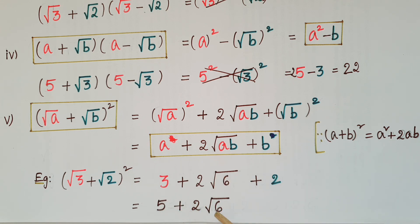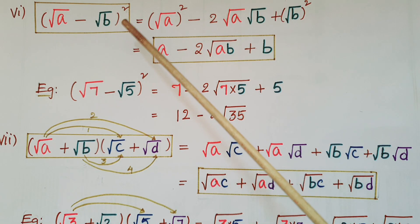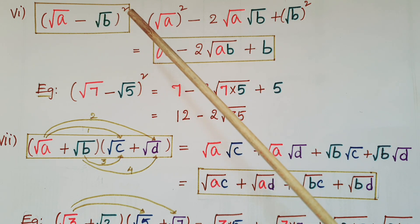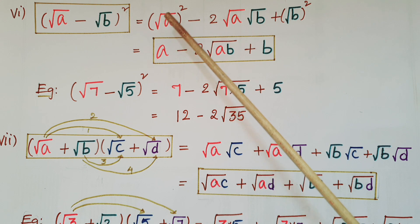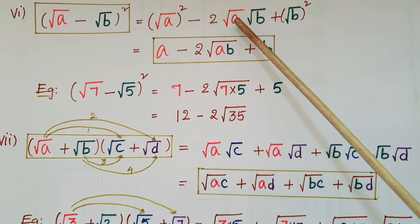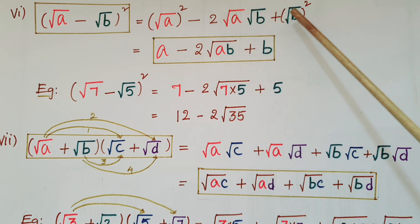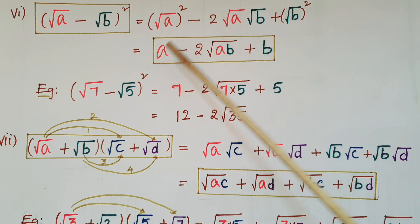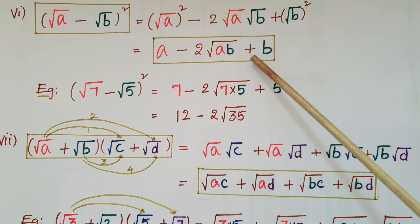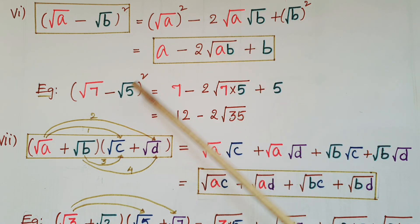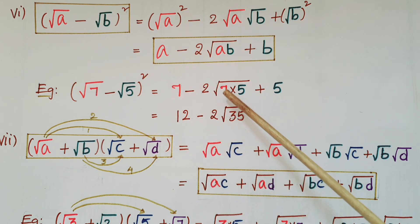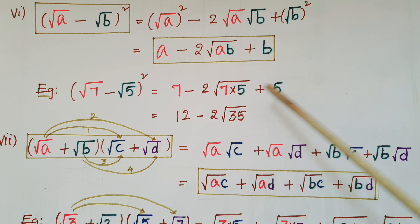The sixth one: (root a − root b) whole square is in the form of (a − b)². We know (a − b)² = a² − 2ab + b². Here a is root a and b is root b, so: (root a)² − 2·root(ab) + (root b)² = a − 2·root(ab) + b. For example, (root 7 − root 5)² = 7 − 2·root(35) + 5 = 12 − 2·root 35.